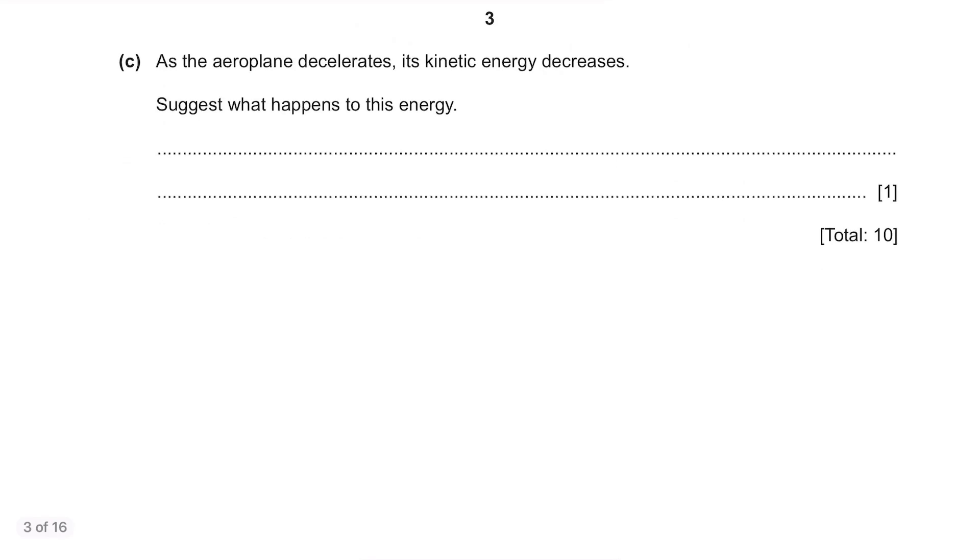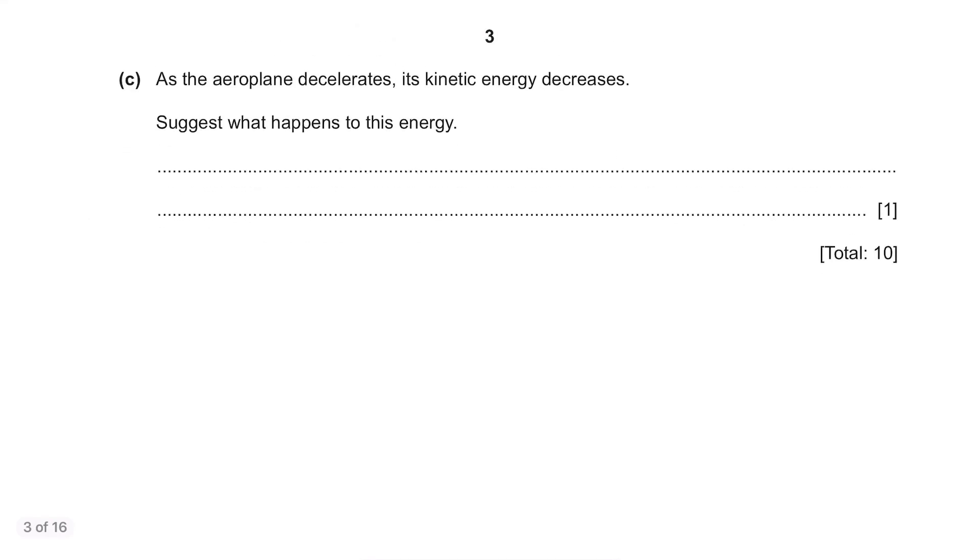Part C. As the aeroplane decelerates, its kinetic energy decreases. So what happens to this energy? When the aeroplane slows down, its kinetic energy decreases but where does that energy go? There will be thermal energy produced and since it's an aeroplane, you can say it was produced in brakes or in tyres.